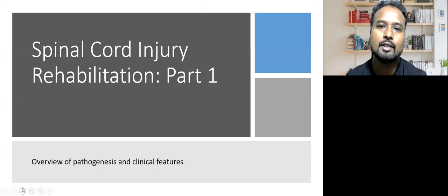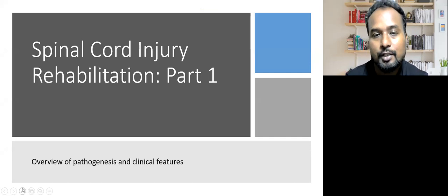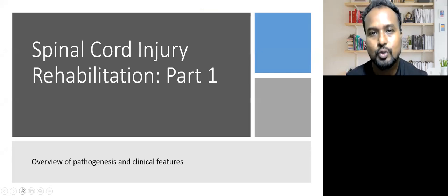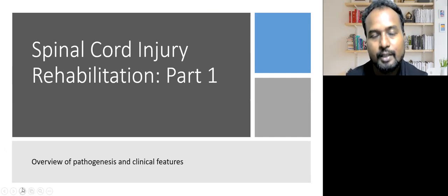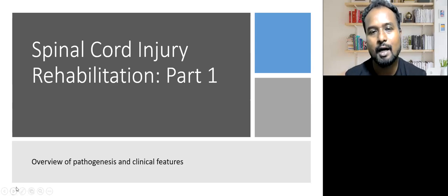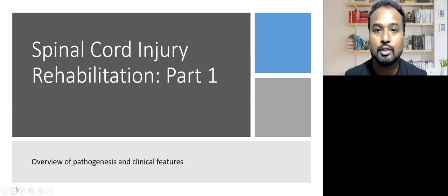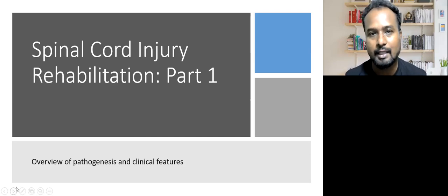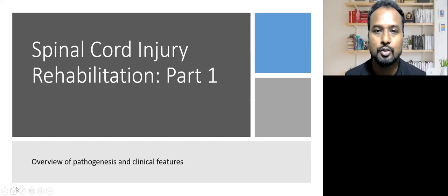I'll be focusing on traumatic spinal cord injury, but the features or the content would be more or less applicable to other types of spinal cord disorders too. In addition to spinal pathogenesis, I will also briefly cover the clinical features. The purpose of this first part is to give an overview of what happens when there is an injury inside a spinal cord — what are all the pathophysiological processes that take place, and how that knowledge might help us understand the clinical features and also the initial medical treatment that a patient should receive.